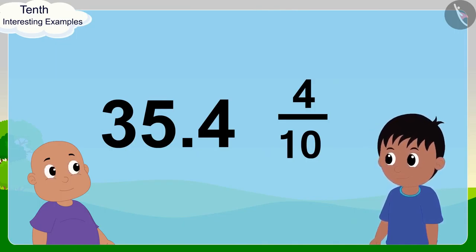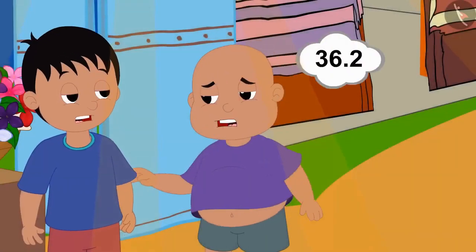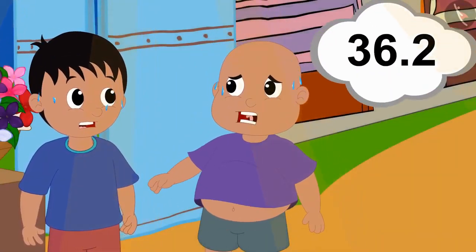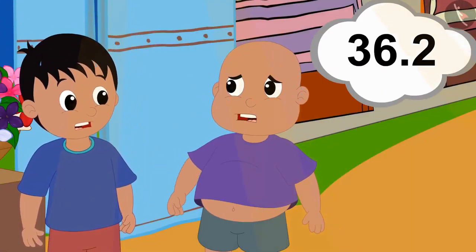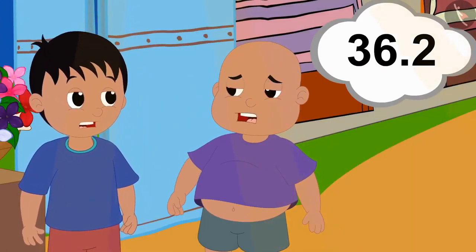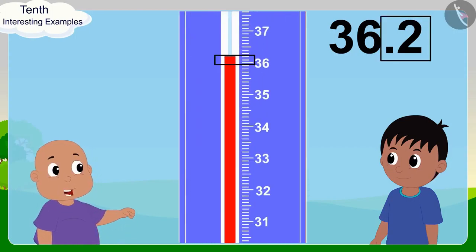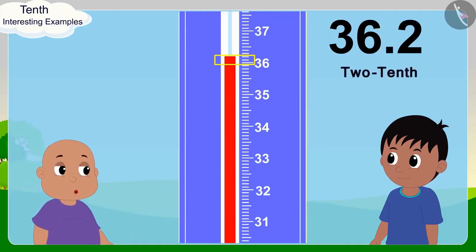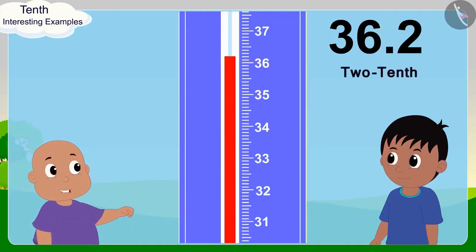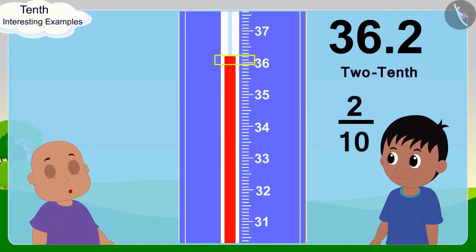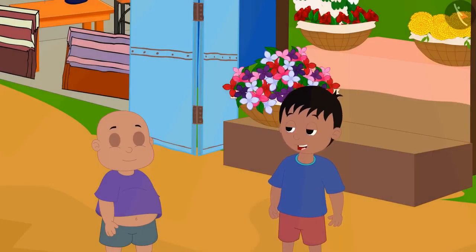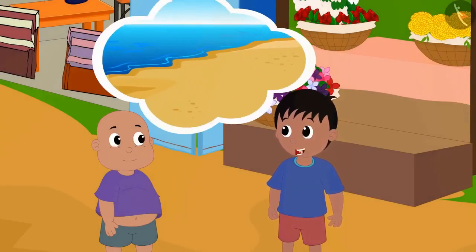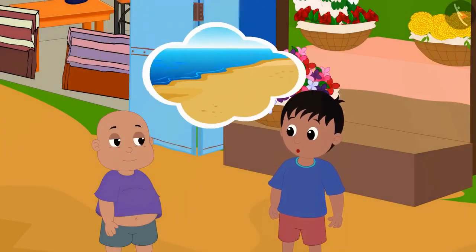Raju explained to Babalu. Babalu said excitedly: Well, if tomorrow's temperature is 36.2 degrees Celsius, then we can say that 0.2 degrees Celsius is 2 tenths of a degree Celsius or 2 by 10 of a degree Celsius. Raju said: All right, Babalu, let us go for a walk on the seashore. We will get some relief from this terrible heat.